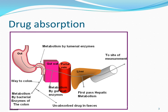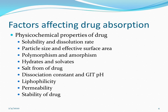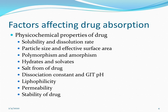Now we will see the factors which are going to affect the absorption of drug. The physicochemical properties of the drug include: solubility and dissolution rate, particle size and effective surface area, polymorphism and amorphism, hydrates and solvates, salt form of drug, the pH partition hypothesis considering the dissociation constant and gastrointestinal pH, lipophilicity, permeability, and stability of the drug.